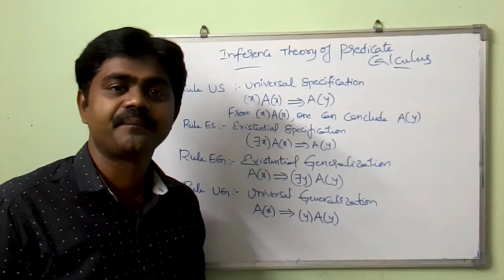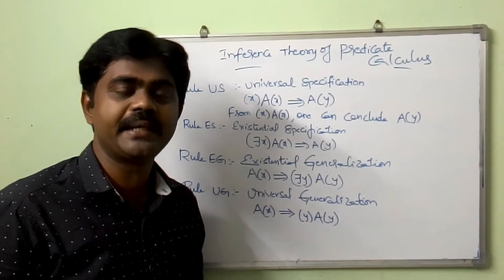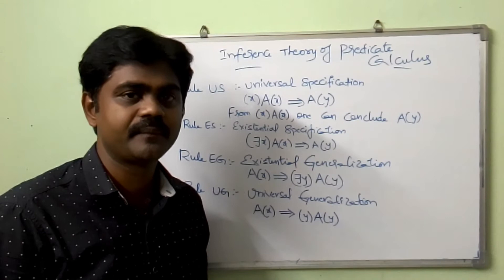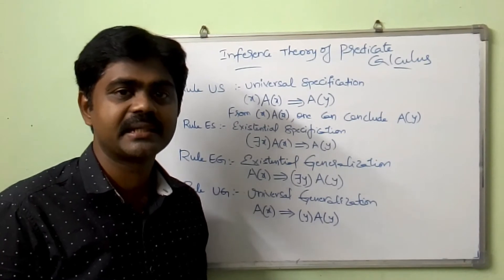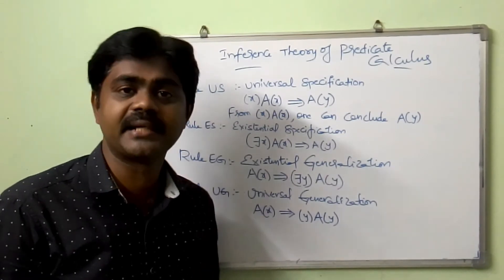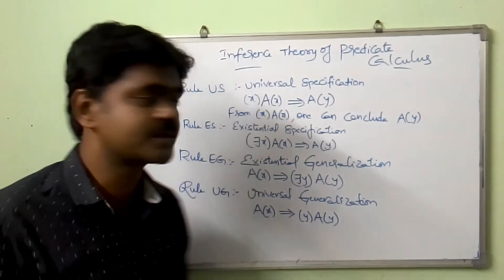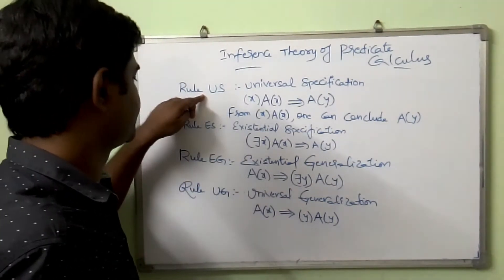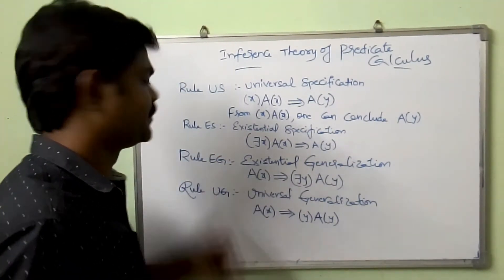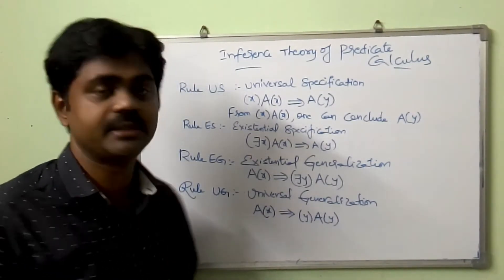So previously, we discussed about rule P and rule T — those are already common. And here, in order to solve this inference theory of predicate calculus, we should know about 4 rules: Rule US, Rule ES, Rule EG, and Rule UG.